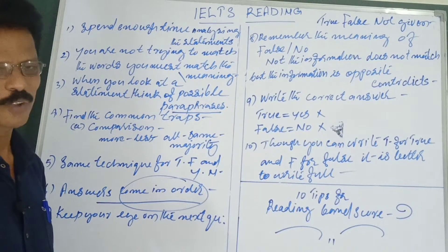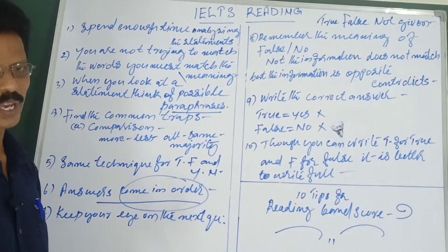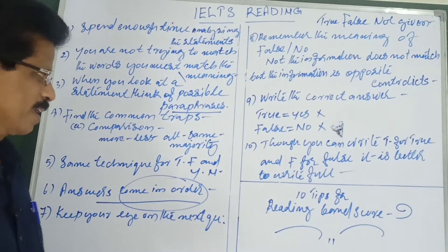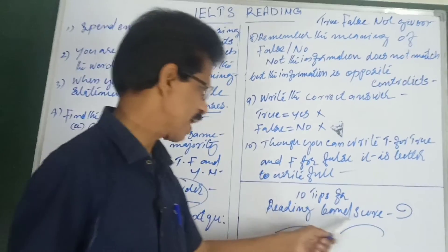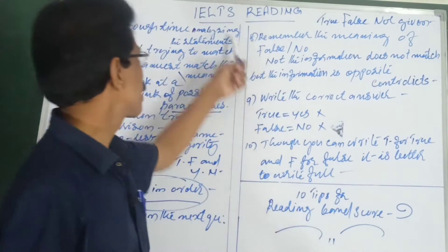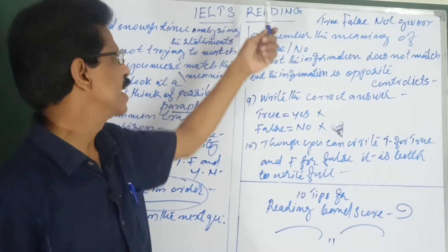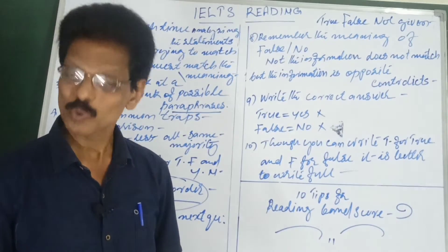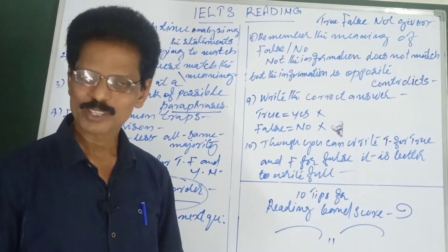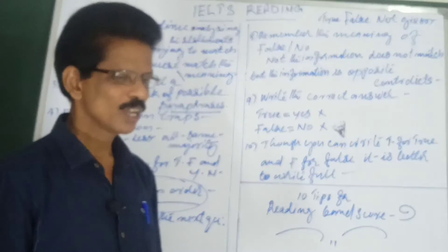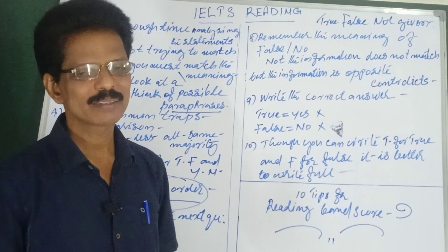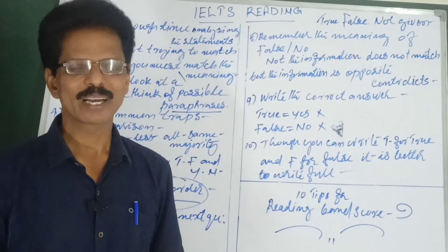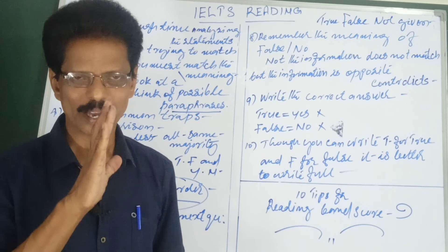Those are the 10 tips to help you get a band score 9 in the IELTS reading module. I hope it is clear to you. Thank you for watching — for more updates, subscribe to the channel SGK English. Goodbye.